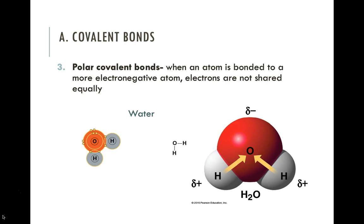Oxygen is very electronegative — those yellow arrows indicate that it is pulling electrons away from hydrogen, meaning electrons spend more time around the oxygen. Because of that, the region around the oxygen becomes more negatively charged, while the regions with hydrogen are more positively charged. Water, because it is a polar molecule — positively charged in some regions and negatively charged in others — has some very specific, very cool properties that we'll talk about in a minute.